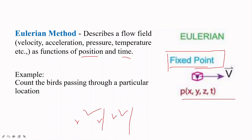An example for the Eulerian method: count the birds passing through a particular location. I fix a particular location, and I only consider the birds coming through that location for my calculation. So at that fixed location, if there are two birds between two reference lines, then the number of birds in my particular location is two birds. This is the Eulerian method — at one fixed location, we find the properties of whatever particles arrive there.